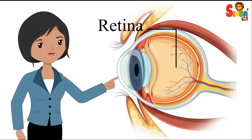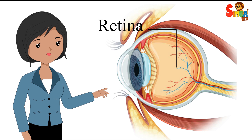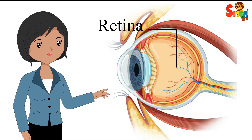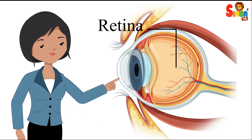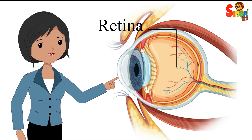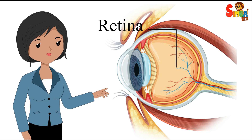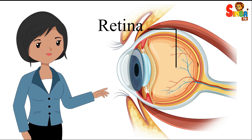Since rods are more abundant in the retina and are more sensitive to light, they are crucial for low-light vision. However, they require a minimum level of light to function effectively.